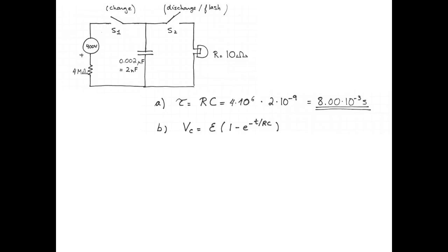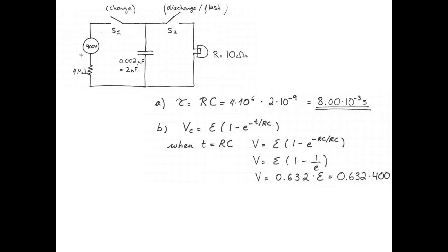Next, let's find the potential difference across the capacitor after one time constant. For this, we need the formula for the voltage across the capacitor as it's charging. That's ε multiplied by 1 minus e to the negative t over RC. When the time is equal to the time constant, we get that the voltage across the capacitor is ε multiplied by 1 minus e to the negative RC over RC. e to the negative RC over RC is just e to the negative 1, which is 1 over e. 1 minus 1 over e is 0.632. So the voltage across the capacitor after one time constant is 0.632 multiplied by the EMF, which is 400 volts. After one time constant, the potential difference across the capacitor is 253 volts.